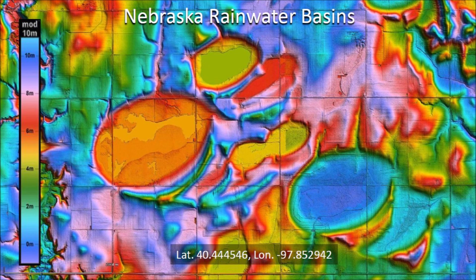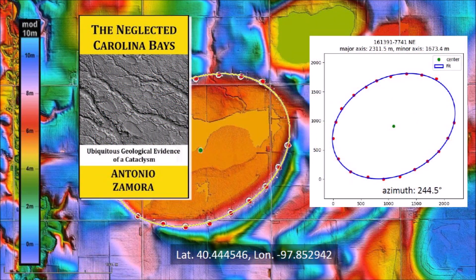Any hypothesis about the origin of the Carolina Bays must also include the origin of the Nebraska Rainwater Basins. Thus far, all publications proposing that the Carolina Bays were created by wind and water mechanisms have ignored the Nebraska basins and have also ignored the mathematically elliptical geometry of well-preserved basins. Fitting ellipses to these basins by the least squares method provides a more quantitative way of studying these enigmatic structures.